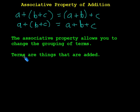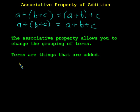Let's pause the video and write down: the associative property allows you to change the grouping of terms, and terms are things that are added. Now let's take a look at a couple of practical applications of the associative property of addition. We could use the associative property — let's call this example 1.